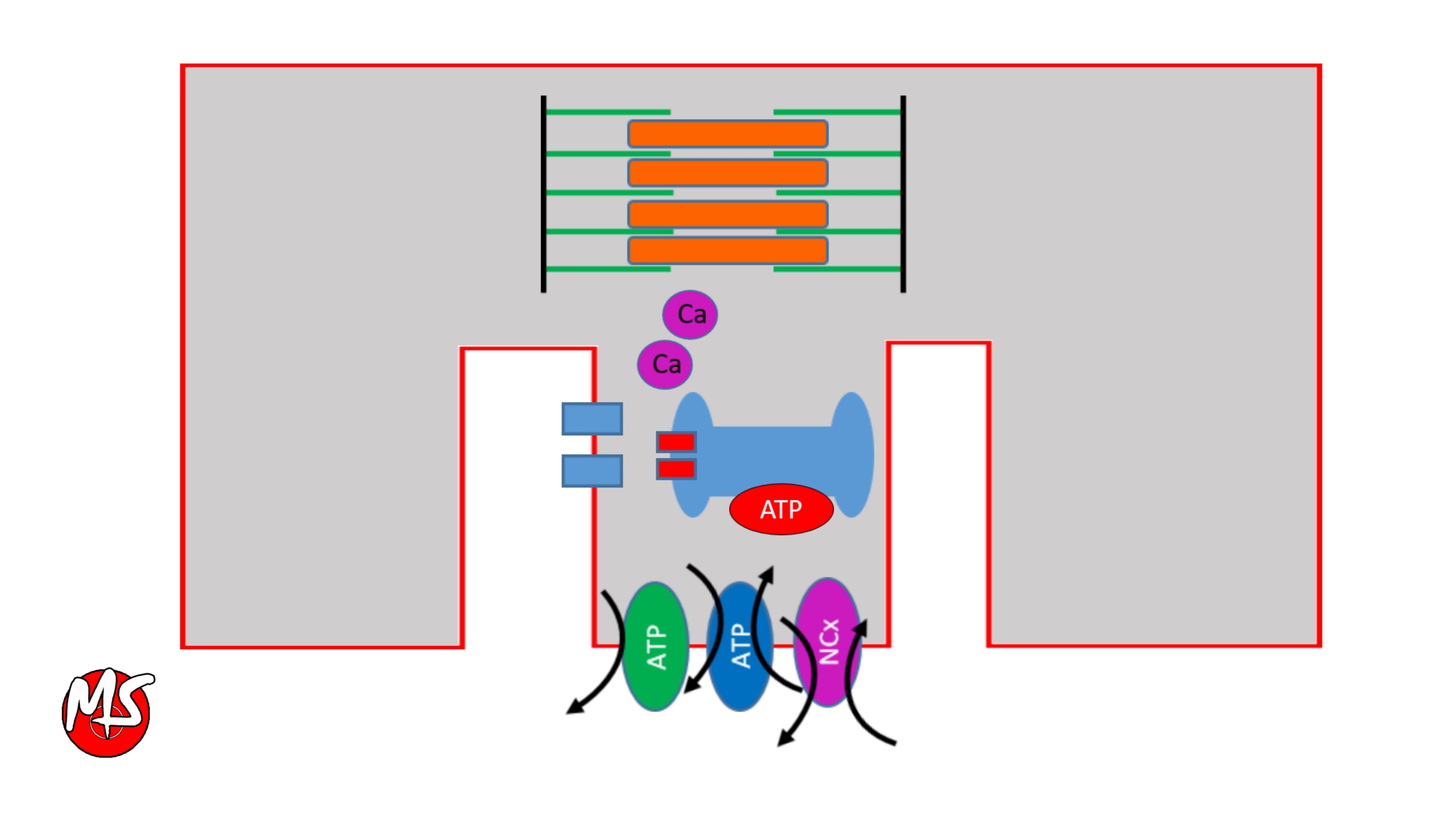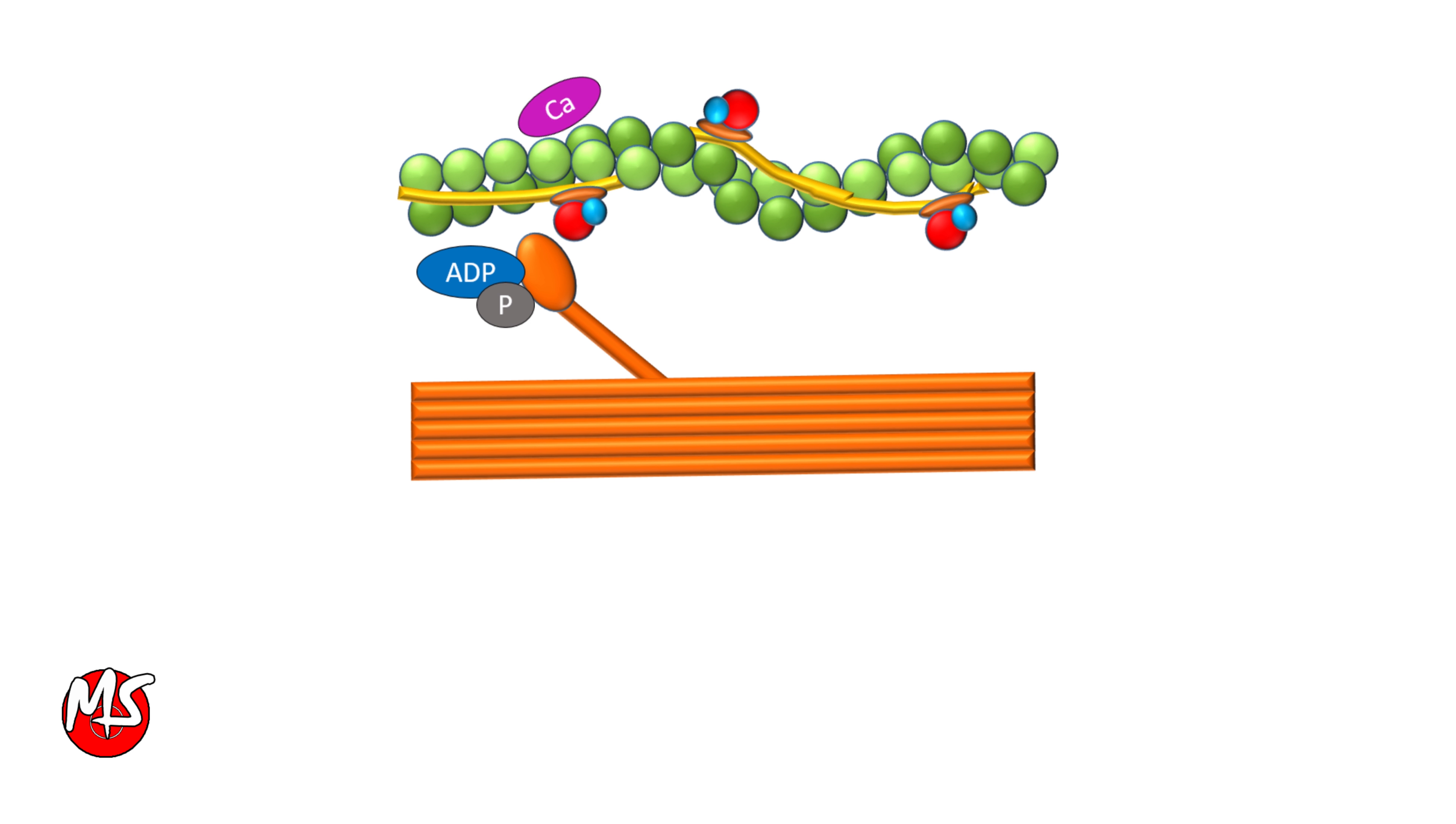These calcium ions then bind to troponin C and start the process of excitation-contraction coupling. The calcium binding to troponin C causes the tropomyosin molecule to move laterally. Thus, myosin binding sites on the actin molecule are uncovered.